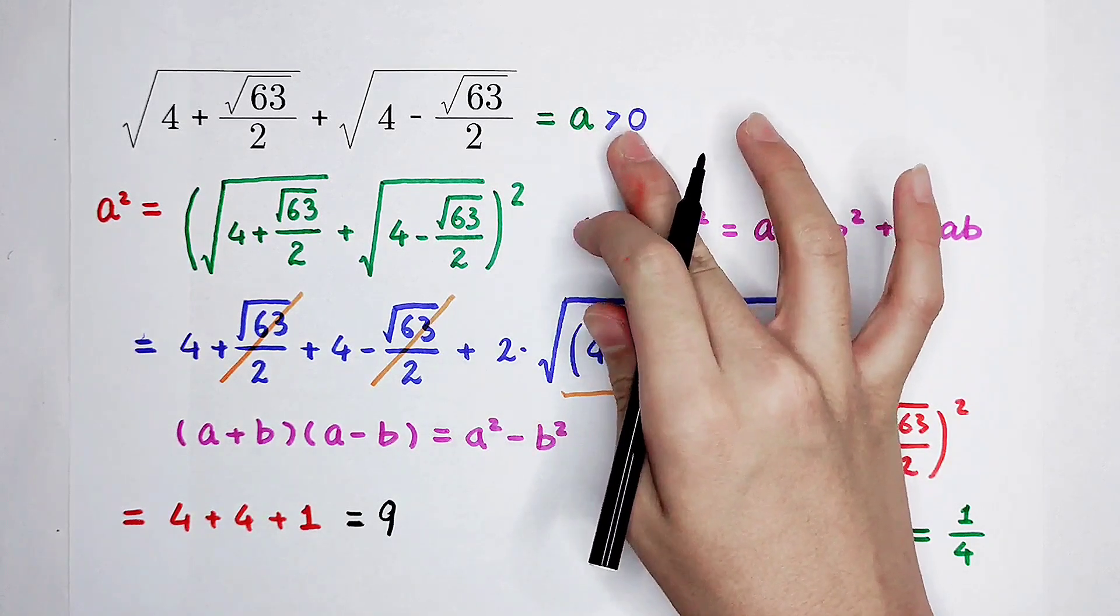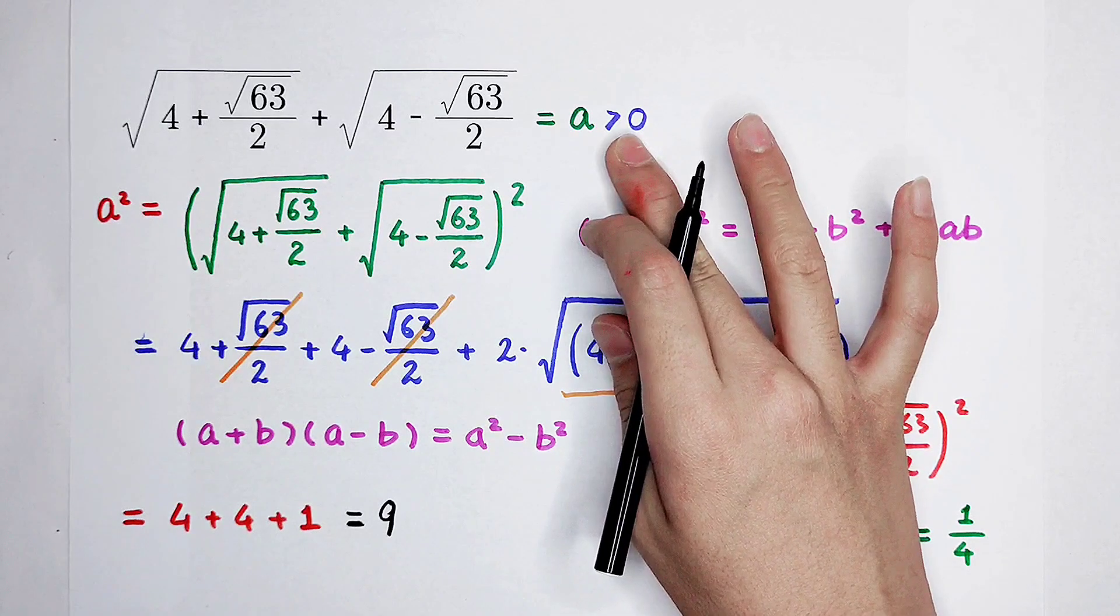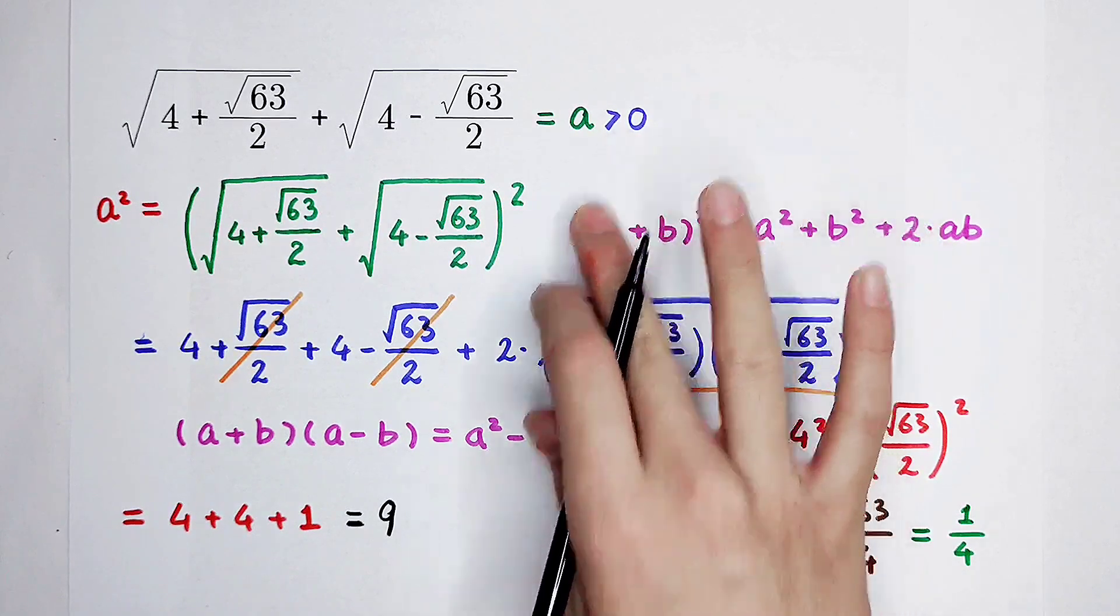Then, a is positive. So, the value of a is square root of 9, which is 3. Did you get it?